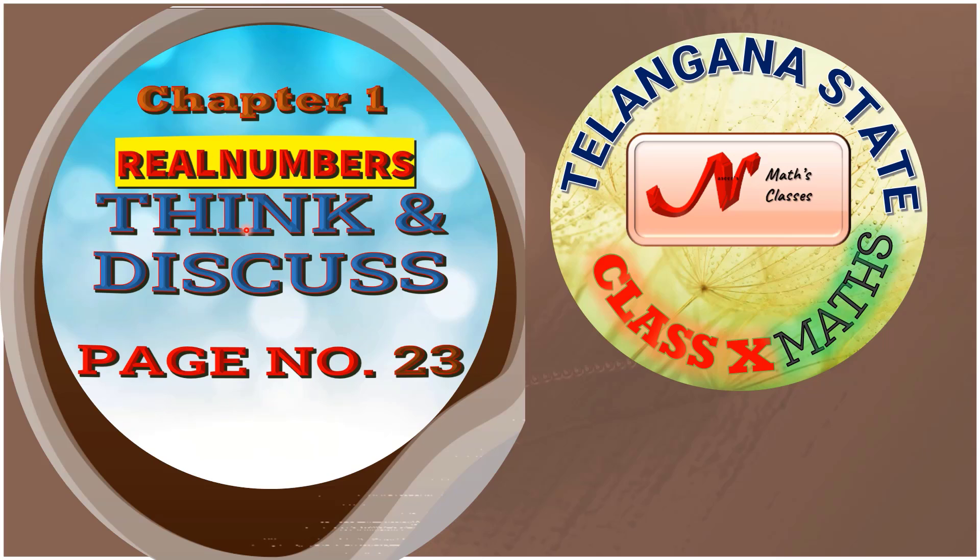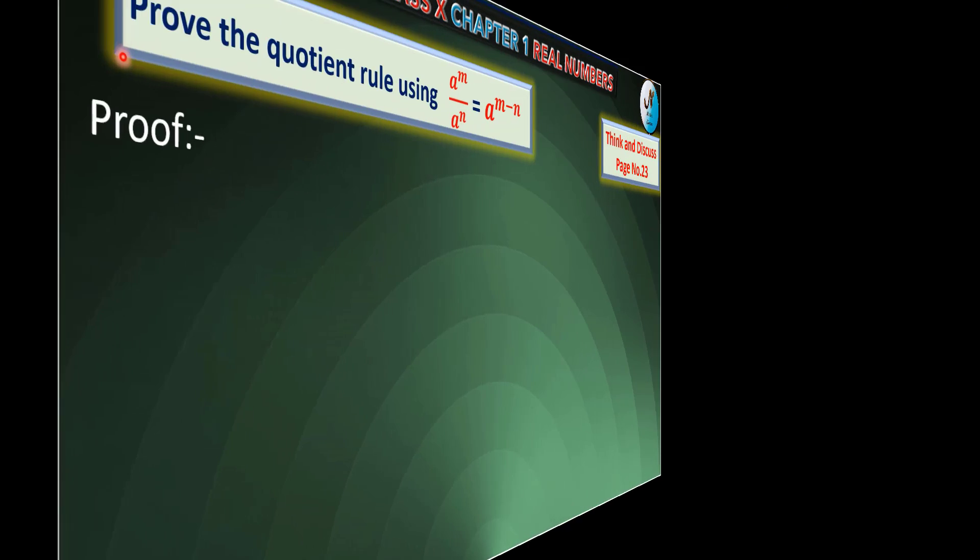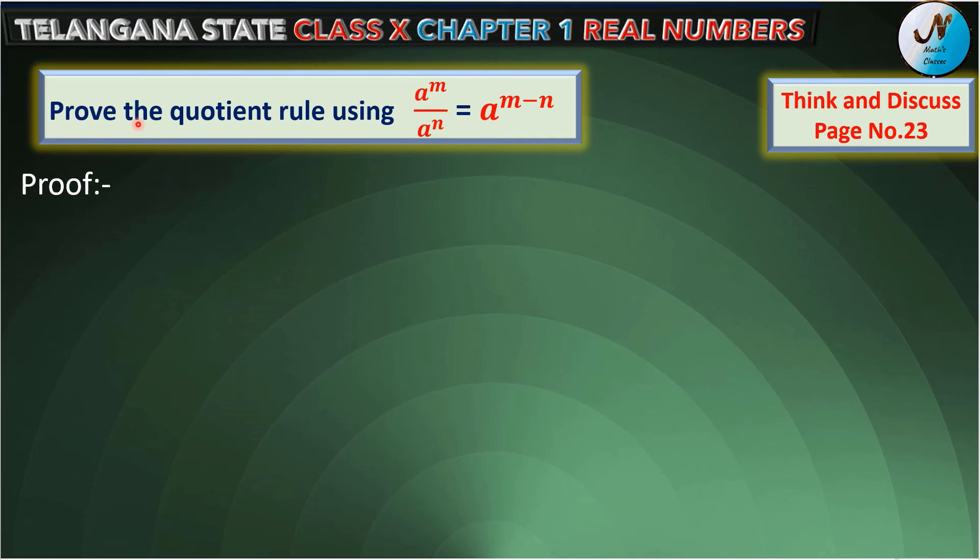In this session we are going to solve chapter 1 real numbers, think and discuss page number 23. In this problem it is given that prove the quotient rule using a power m by a power n is equal to a power m minus n.